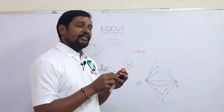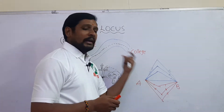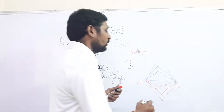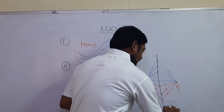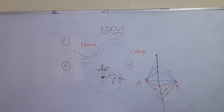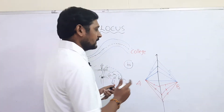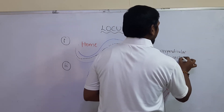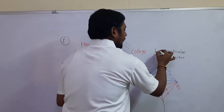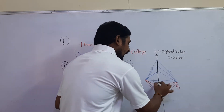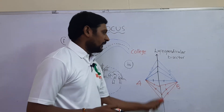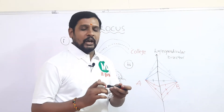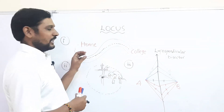We have taken line segment AB with equidistant points. There are infinitely many such points. If we join all those points, it forms a straight line, and this straight line is called the perpendicular bisector. It is called perpendicular bisector because line L is perpendicular to AB as well as bisects it. So this perpendicular bisector is also locus.